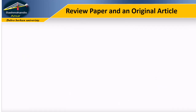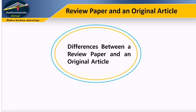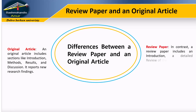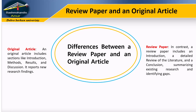Differences between a review paper and an original article: an original article includes sections like introduction, methods, results, and discussion, and it reports new research findings. In contrast, a review paper includes an introduction, a detailed review of the literature, and a conclusion summarizing existing research and identifying gaps.